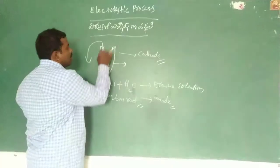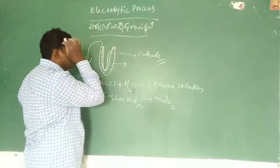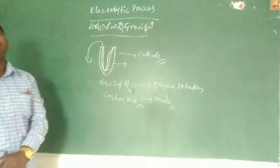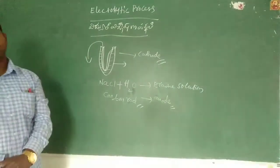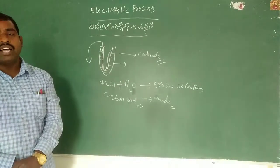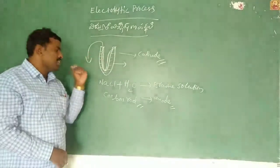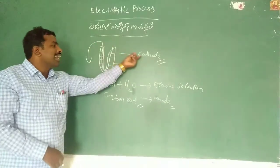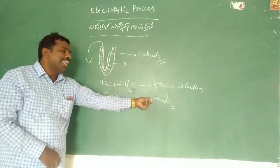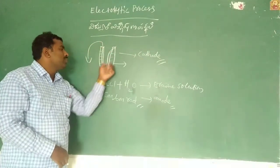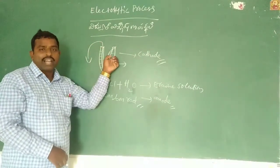The cathode and the anode are connected with electricity. So this brine solution, after connecting with electricity, is utilized as the electrolyte in this process. They are passing current through it.